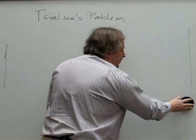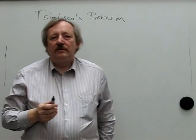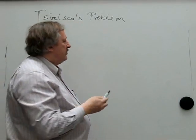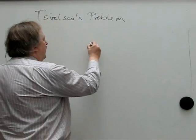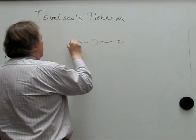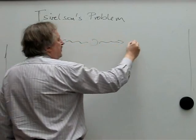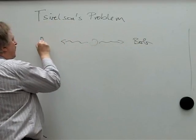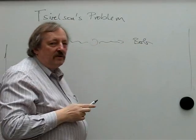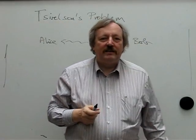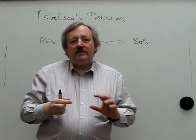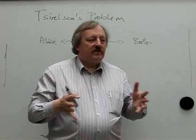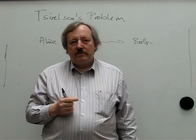It is a problem about correlation inequalities. As always, we have some source and particles going right and left, with Alice and Bob doing experiments. The setting is that they would have a certain number of observables available, each of them.